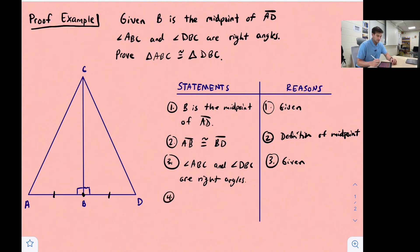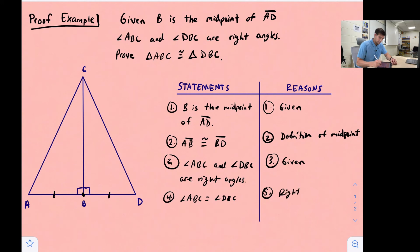Statement four: angle ABC is congruent to angle DBC. The reason for that is the Right Angles Congruence Theorem — we learned that in chapter two. This is statement number four.